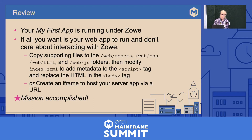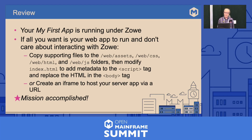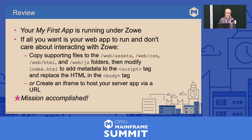In review: your My First App is now running under Zoe. All you need is your web app to run and you don't care about interacting with Zoe. You can copy your supporting files from your web application, modify the index.html to add metadata to the script tag to get jQuery and your CSS, and replace the HTML in the body tag. Or you can create an iframe to host your server app via URL. Mission accomplished — it really is fairly easy once you know how.